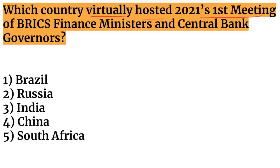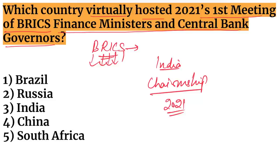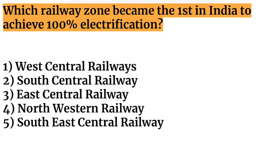Next question: which country virtually hosted the 2021 first meeting of BRICS Finance Ministers and Central Bank Governors? BRICS stands for Brazil, Russia, India, China, and South Africa. India holds the BRICS chairmanship for 2021 and will host the 13th BRICS Summit. So the answer is India.